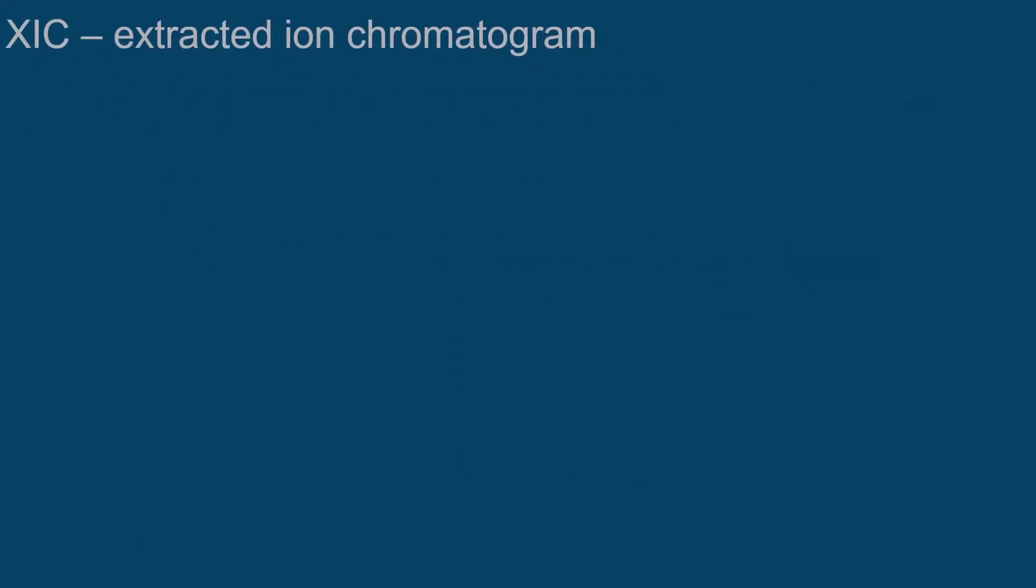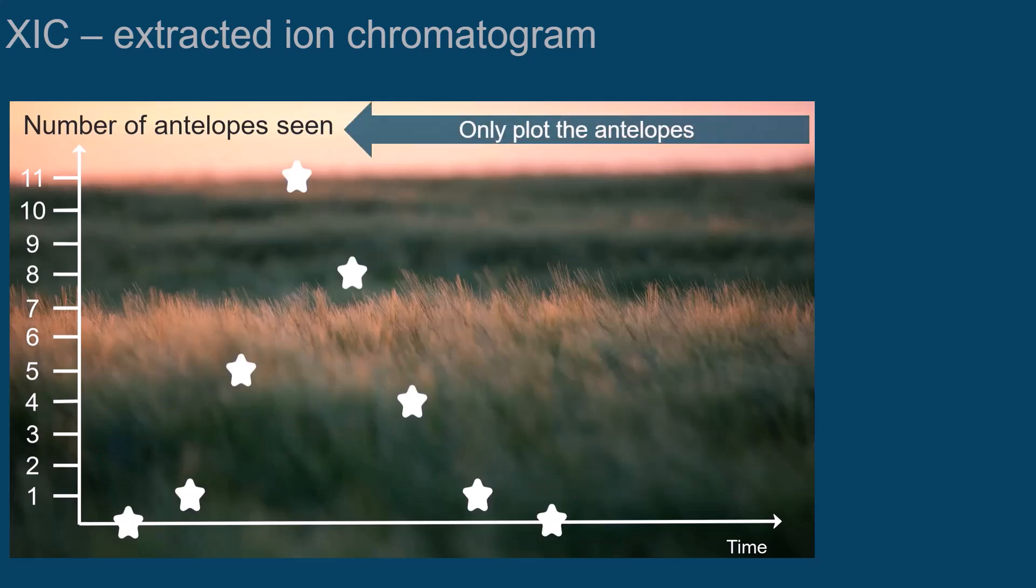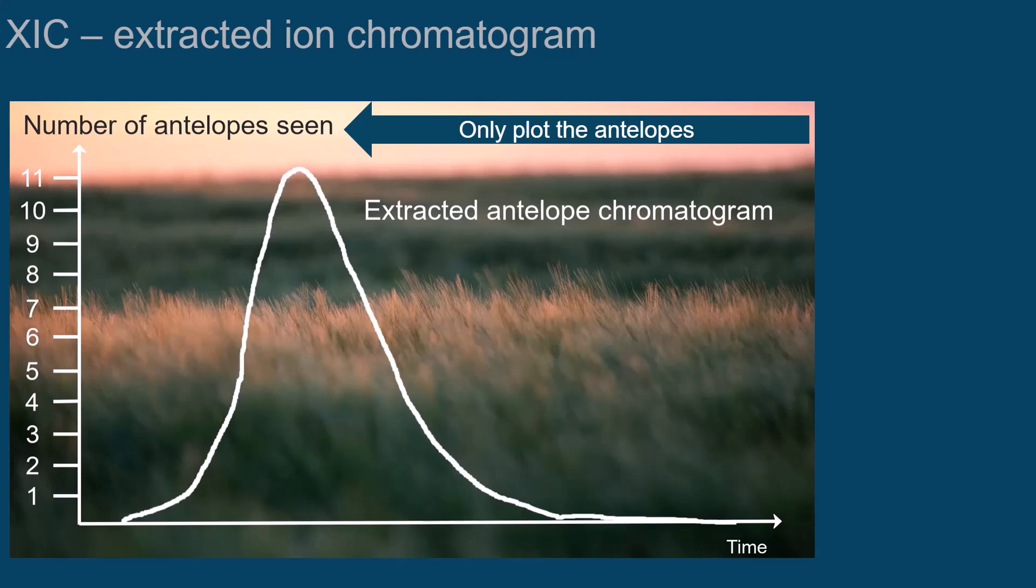The extracted ion chromatogram is a similar representation to the total ion chromatogram. The difference in our example is that although you can see all animals, you only plot one species of animal, in this case the antelopes. That is, you electronically extract the antelopes from all the animals you have observed.